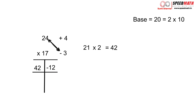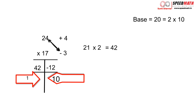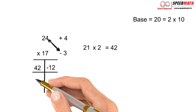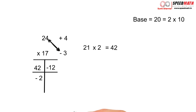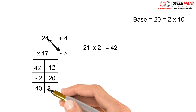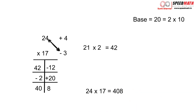If I borrow 1 from the left side, I get only 10 on the right, which isn't enough to remove −12. So instead I borrow 2 from the left side, adding 20 to the right side. 42 − 2 = 40 on the left, and 20 − 12 = 8 on the right. So 24 × 17 = 408.